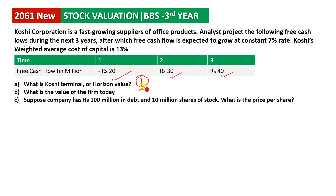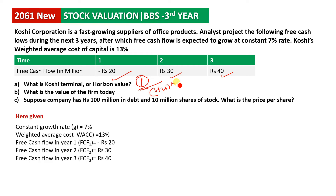The value of the firm today. The company will emit one hundred million more in debt or loan. The evaluation of the entire firm — the corporate valuation model. The constant growth rate is 7% and the average cost of capital is 30%. The first year is 20 million, and the second year is 30 million.